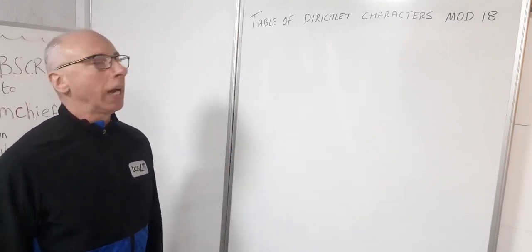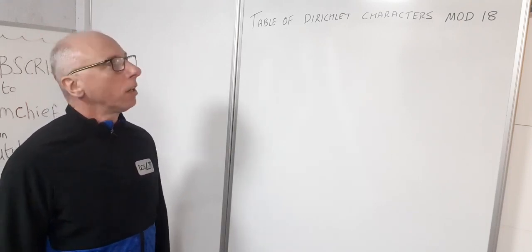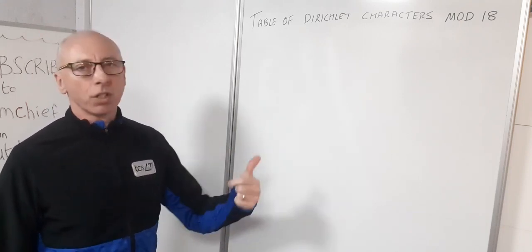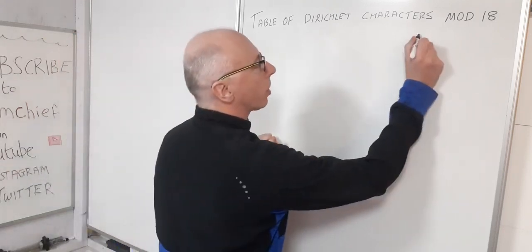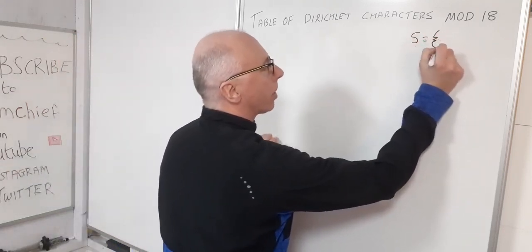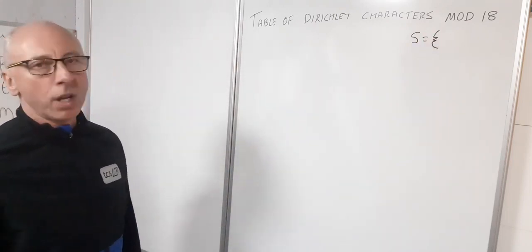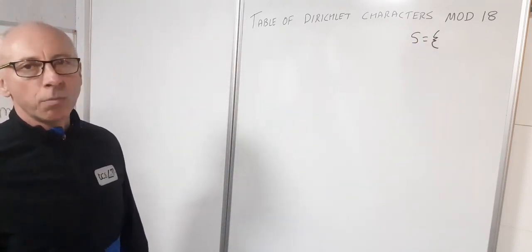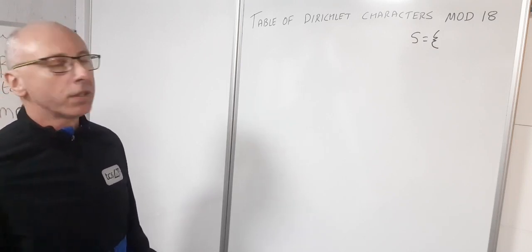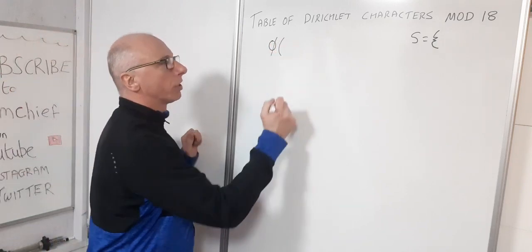Okay, so modulo 18 — how are we going to go about finding that? Well, first of all we need a set of coprime integers to 18. I'm going to call that set S. We need to know how many elements and also what those elements are. To find the number of elements we can use Euler's totient function, sometimes known as Euler's phi function.